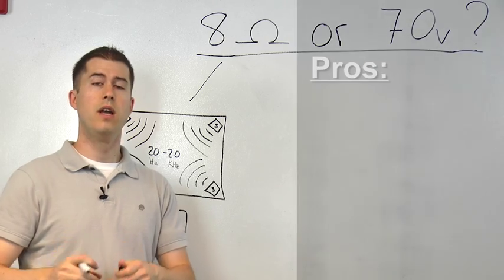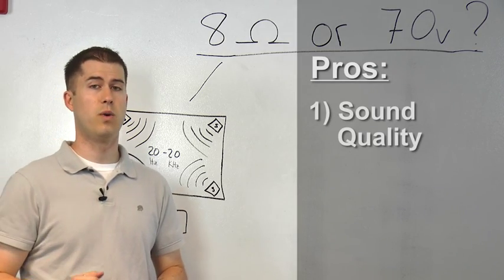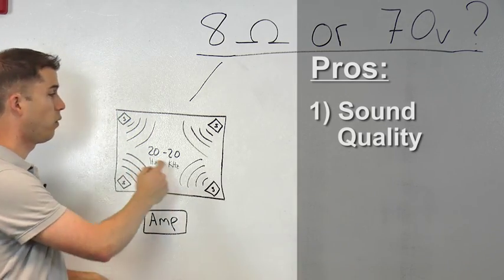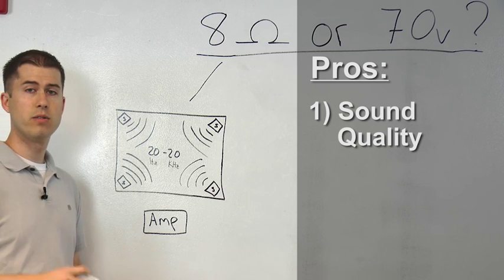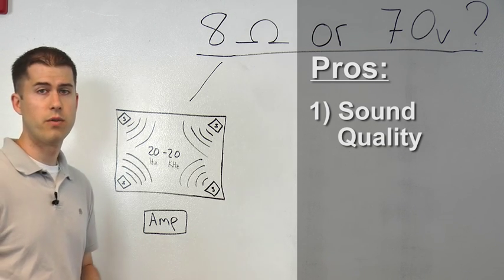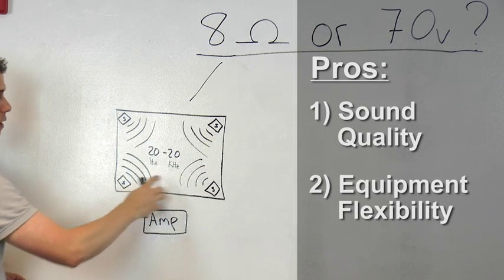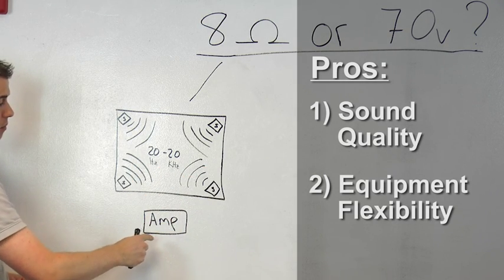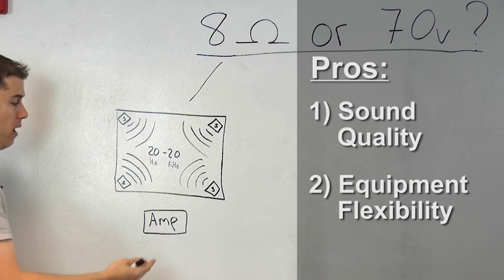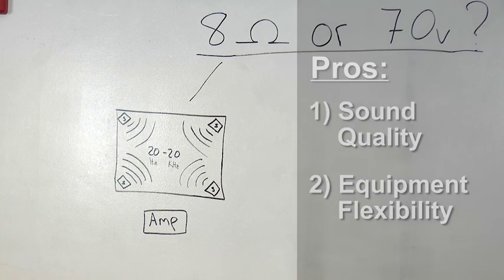Now, first and foremost, the biggest pro to 8 ohms is the sound quality. You get a full range of 20-20 sound, and a stereo setup ensures accurate reproduction of the recorded material. And there's plenty of flexibility in both the speakers available as well as the amp to power them. You can use a dedicated high power amp, an AVR, or even zone 2 off that AVR.